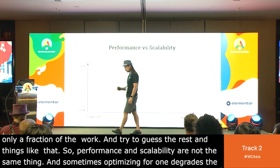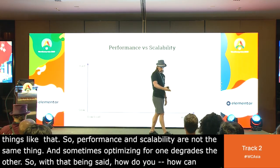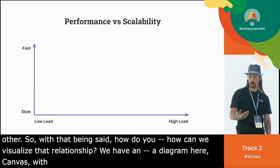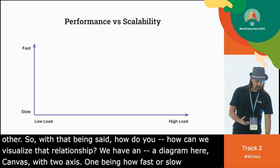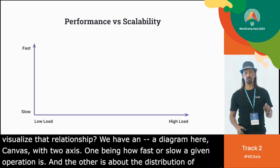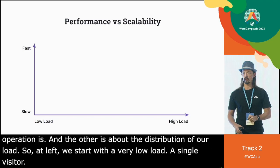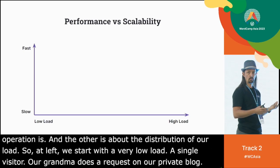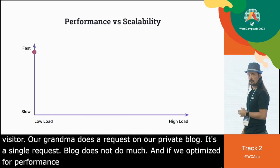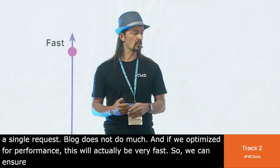How can we visualize that relationship? We have a diagram with two axes: one being how fast or slow a given operation is, and the other being the distribution of our load. On the left we start with very low load — a single visitor, our grandma, does a request on our private blog. The blog does not do much, and if we optimize it for performance, this will be very fast. We can ensure that this single operation executes almost instantly.